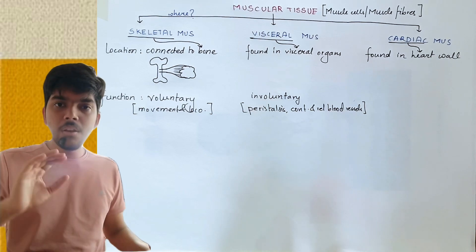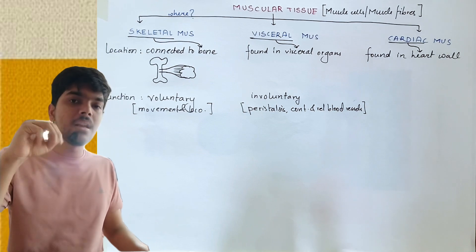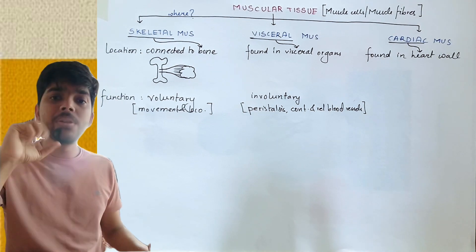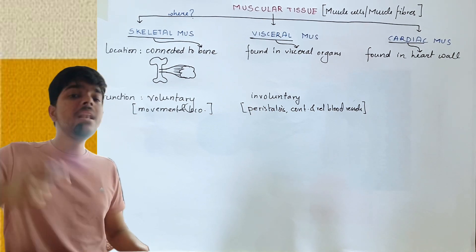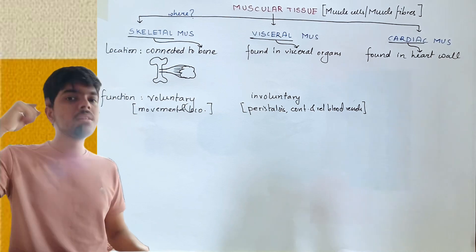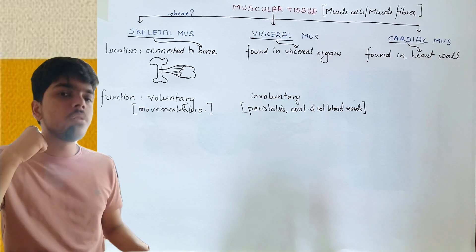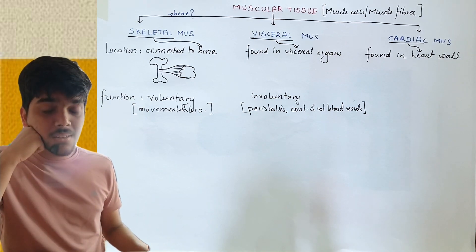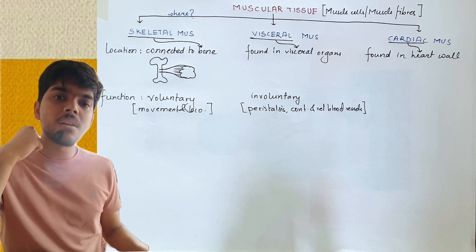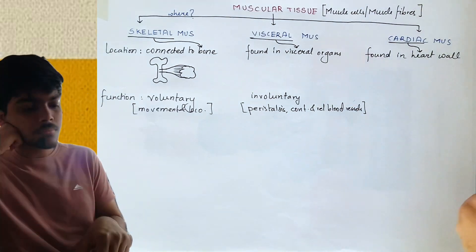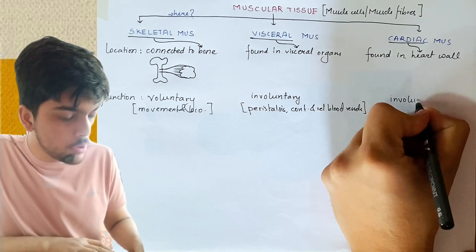Another example: in your blood vessels such as veins and arteries, there are three layers making up the wall. The middle layer is made up of muscles which contract and relax, helping in the circulation of blood. This contraction and relaxation is not under our control, so it is involuntary. Since it is found in a visceral organ, it is visceral muscle. Finally, cardiac muscle is also involuntary.